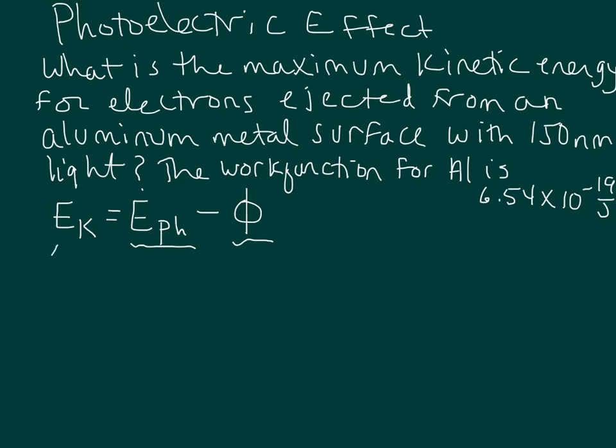We use the term maximum kinetic energy because that's just the most that is possible. So basically we're looking for the kinetic energy of the ejected electrons. Let's start with the energy of the photon. We are given a wavelength, but we're not given the actual energy of the photon itself. So let's also remind ourselves that the energy of a photon is equal to hc over lambda.